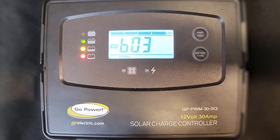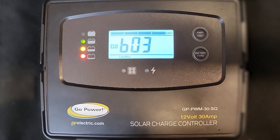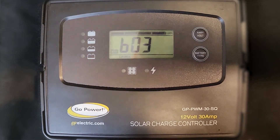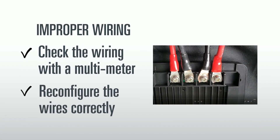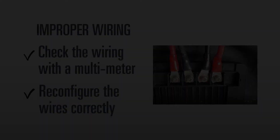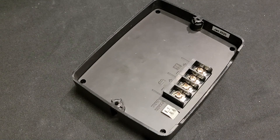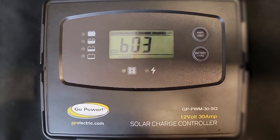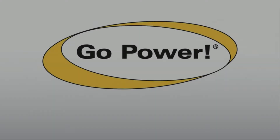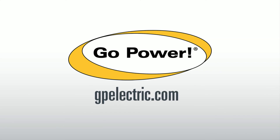There have been instances where the solar wires have been placed in the battery connections on the solar controller, and the BO3 error code would show in this instance as well. Check on the back of the controller with a multimeter to confirm the charging sources. If it has been wired incorrectly, swap the wires to the correct position. There are labels on the back of the controller to indicate the correct positions. If you complete these steps and your controller is still showing the error, contact GO Power technical support for additional steps. Contact info is included in the description below.